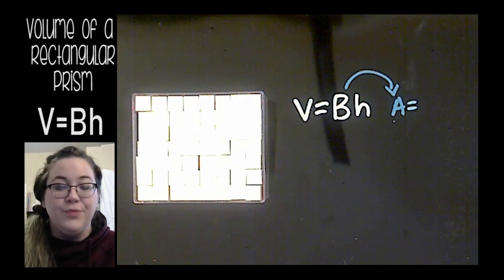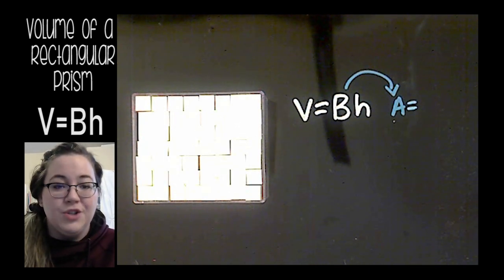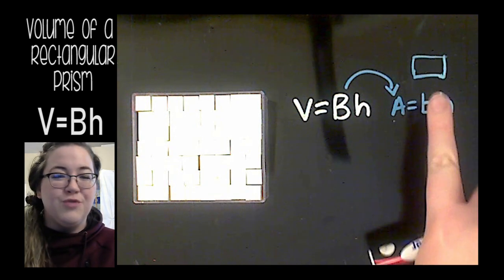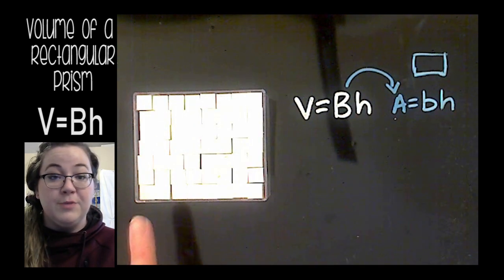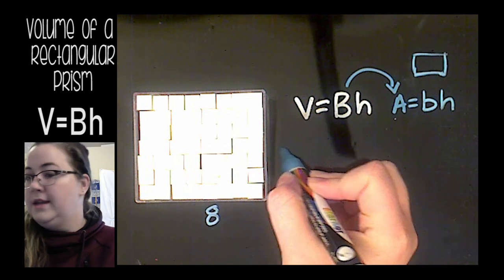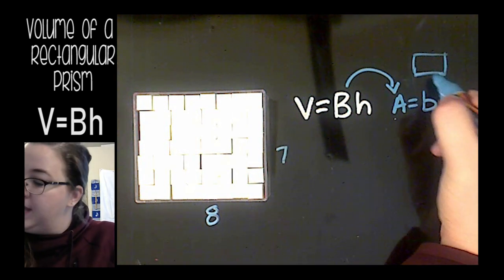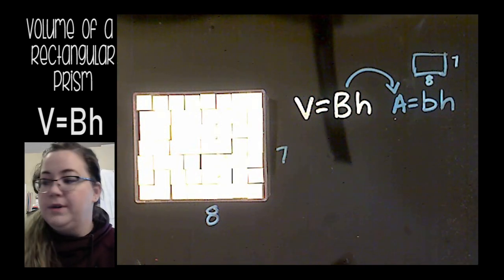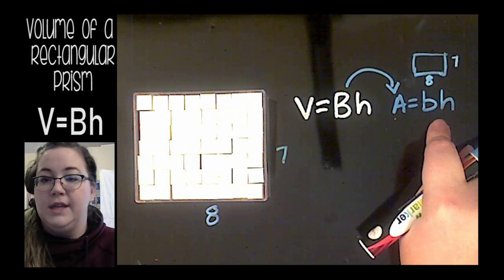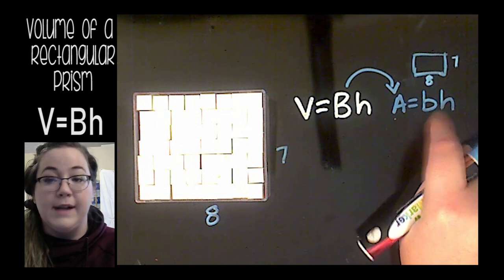So area of a rectangle is BH, or base times height, and I put a little rectangle to help me out. I'm going to put the measurements we had here, which was eight and seven. The base of my shape was eight and my height was seven. So now I'm going to plug those numbers, eight and seven, into this formula for my area of my rectangle.